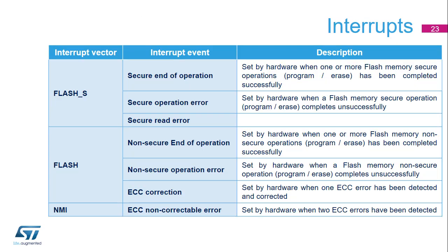The flash memory controller supports many interrupt sources. Two maskable interrupt request signals are used to report a flash event to the NVIC: FLASH_S for secure events and FLASH for non-secure events. An interrupt can be asserted upon successful end of operation or when an error occurs during a program or erase operation. A single-bit error correction is also a non-secure interrupt source. When two-bit errors are detected on a flash memory read, the non-maskable interrupt is asserted.